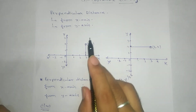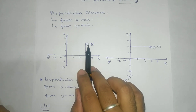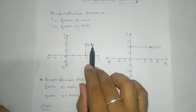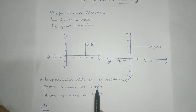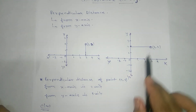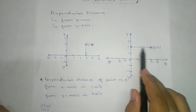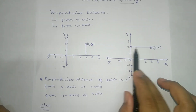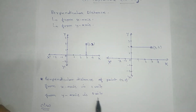To find the distance of a point from the x-axis, look at the y-coordinate — here it is two, so the answer is two units. For the distance from the y-axis, look at the x-coordinate — we take the perpendicular and the length equals three units. Since it is a distance, we need to mention the units.